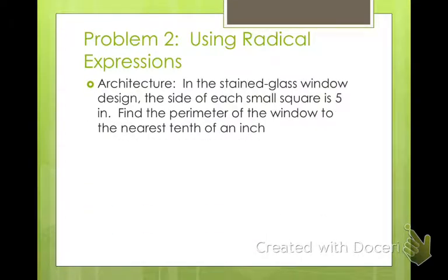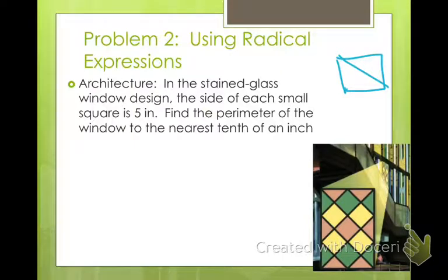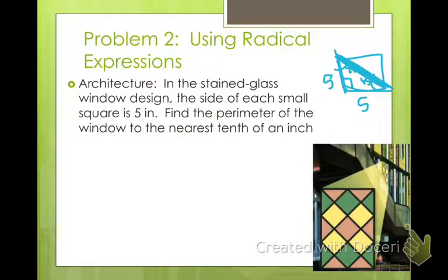Architecture problem: in a stained glass window design, the side of each small square is 5 inches. Find the perimeter of the window to the nearest tenth of an inch. Here is a picture of the stained glass window, and the side of each small square is 5 inches. From geometry, if we have a square with sides of 5 and a right angle, it's a 45-45-90 triangle. The hypotenuse of a square with side x is x square root of 2.